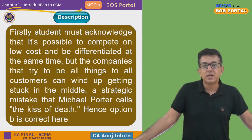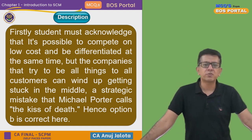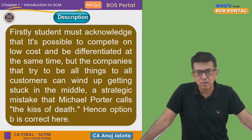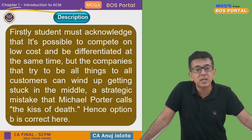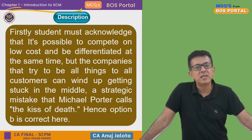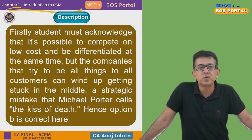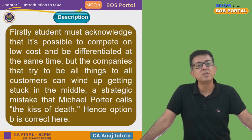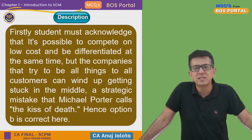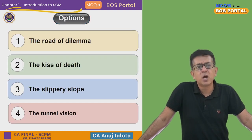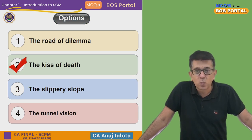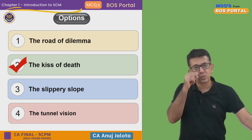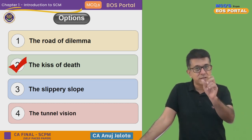Michael Porter was always of the opinion that if you try to think you will have one product which you will sell the cheapest but it will also be very different from the market, he says you are kissing death — it will be a suicide mission for you. There are so many examples in the past of companies that tried to do that and all of them failed. So out of the four options, the answer should be 'Kiss of Death.'